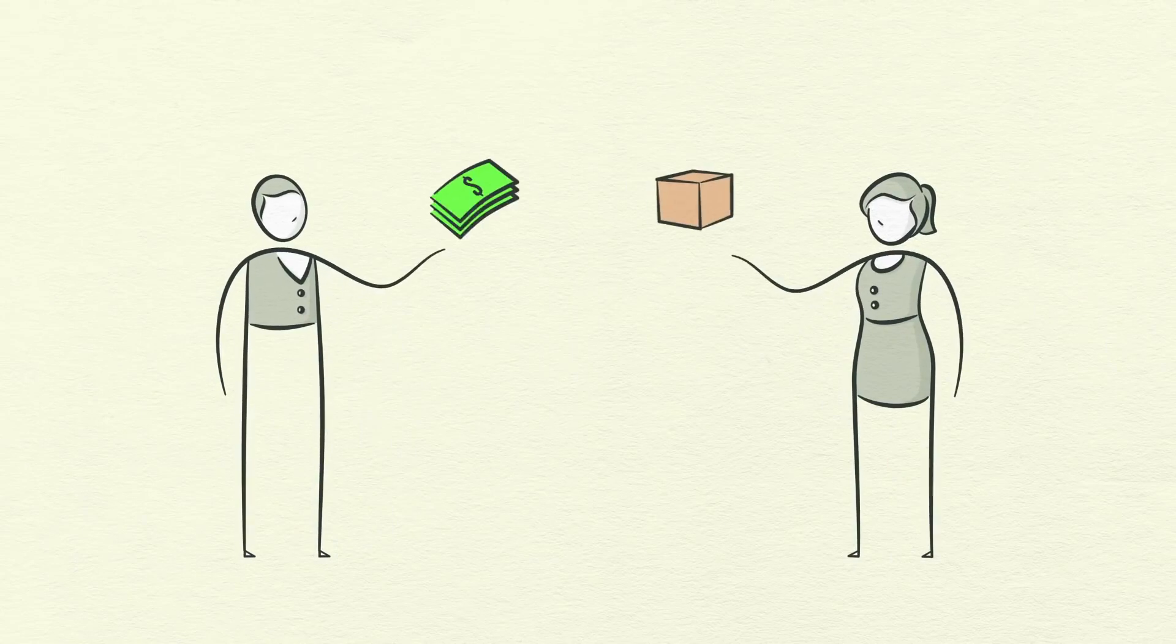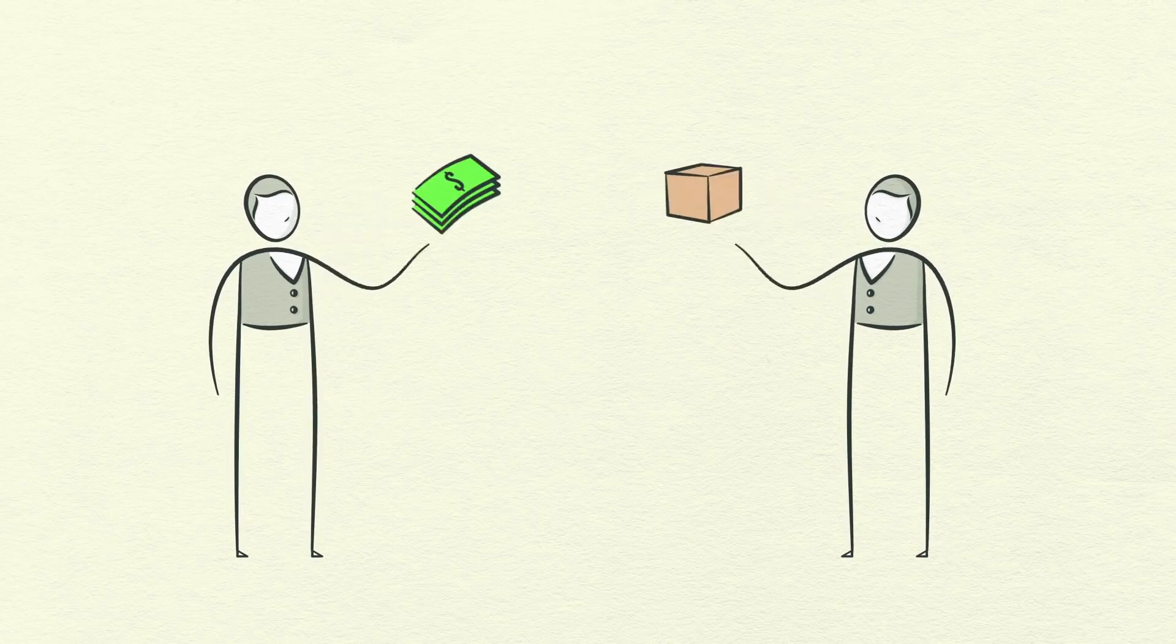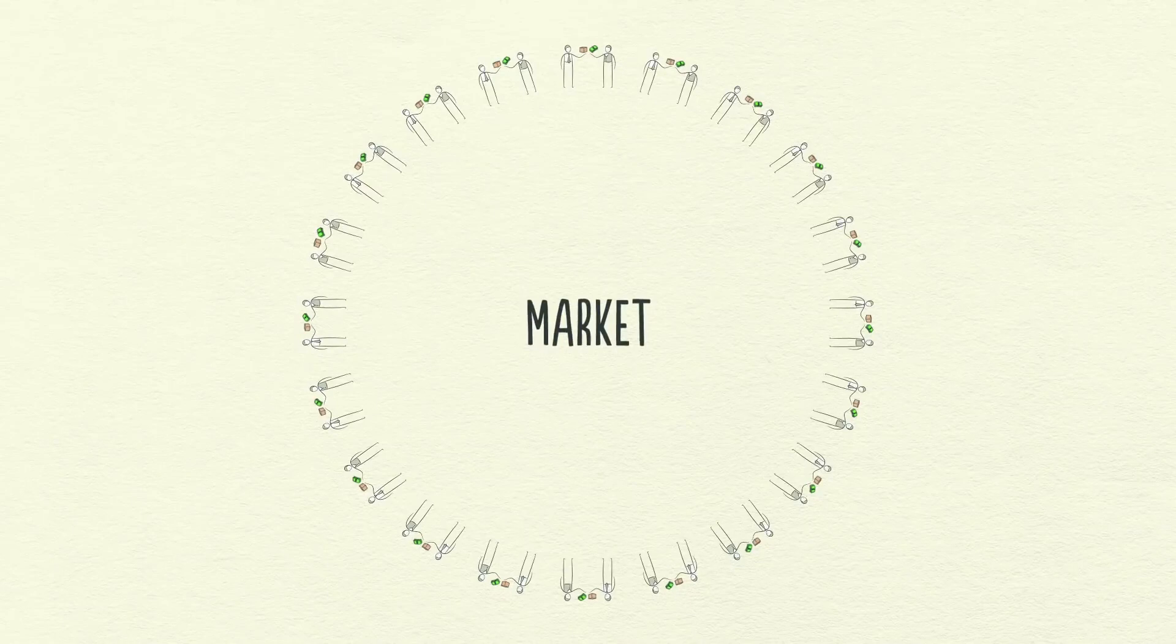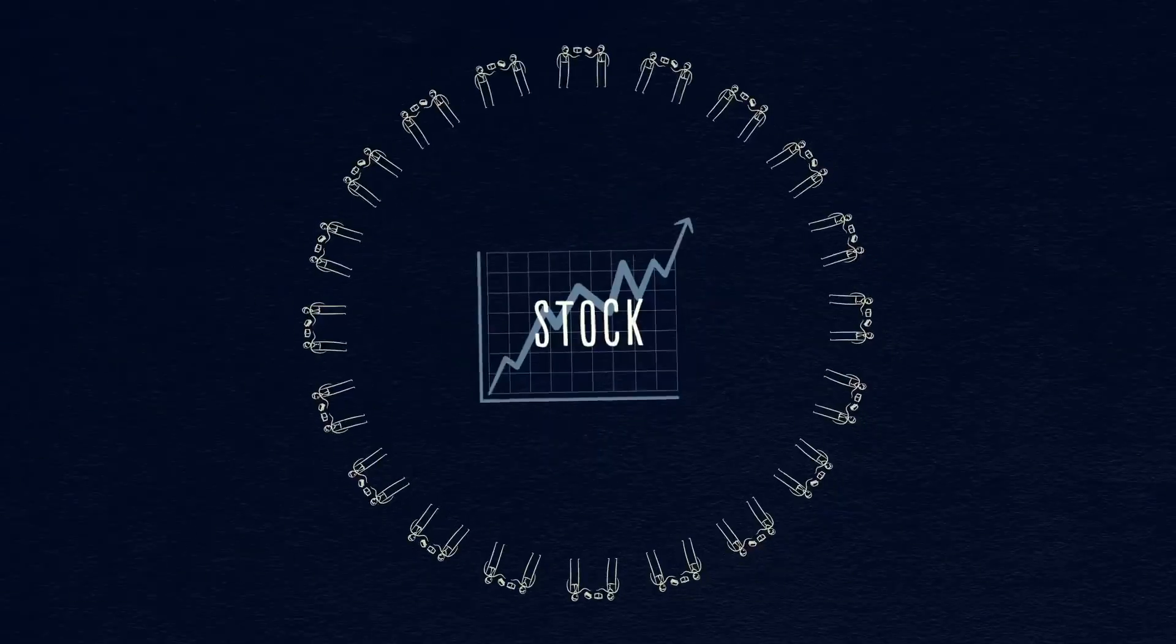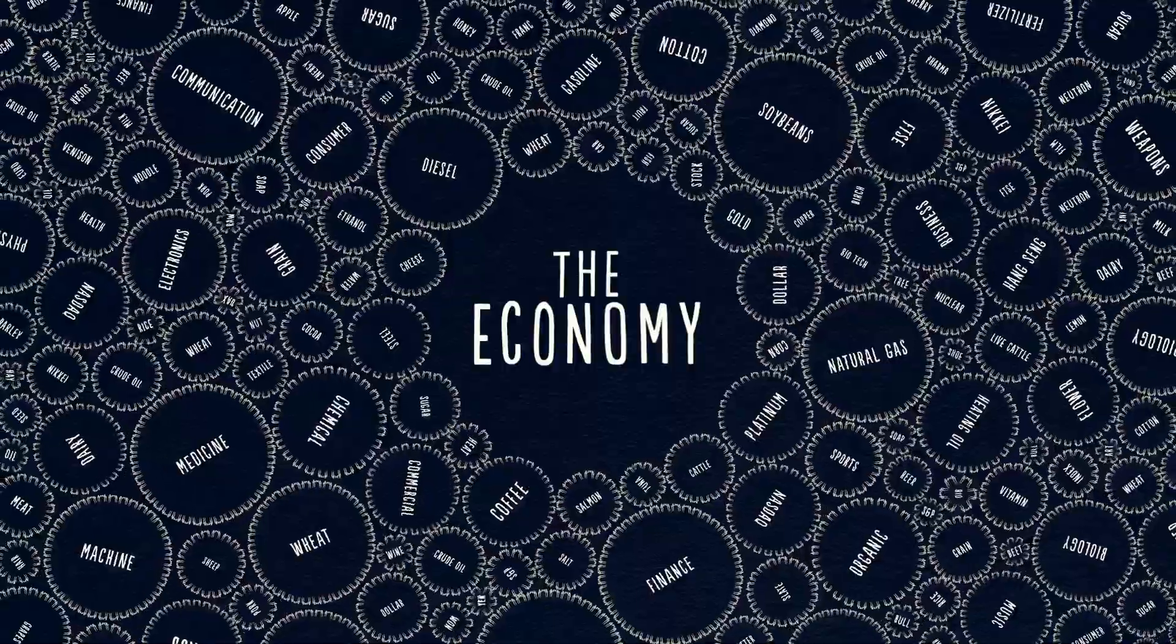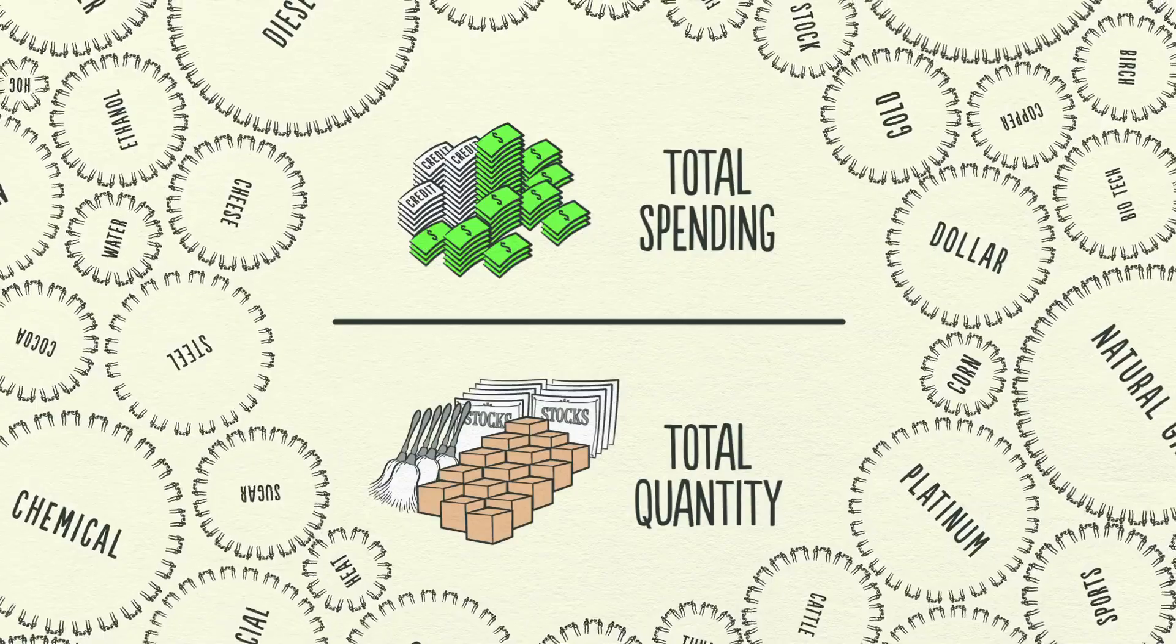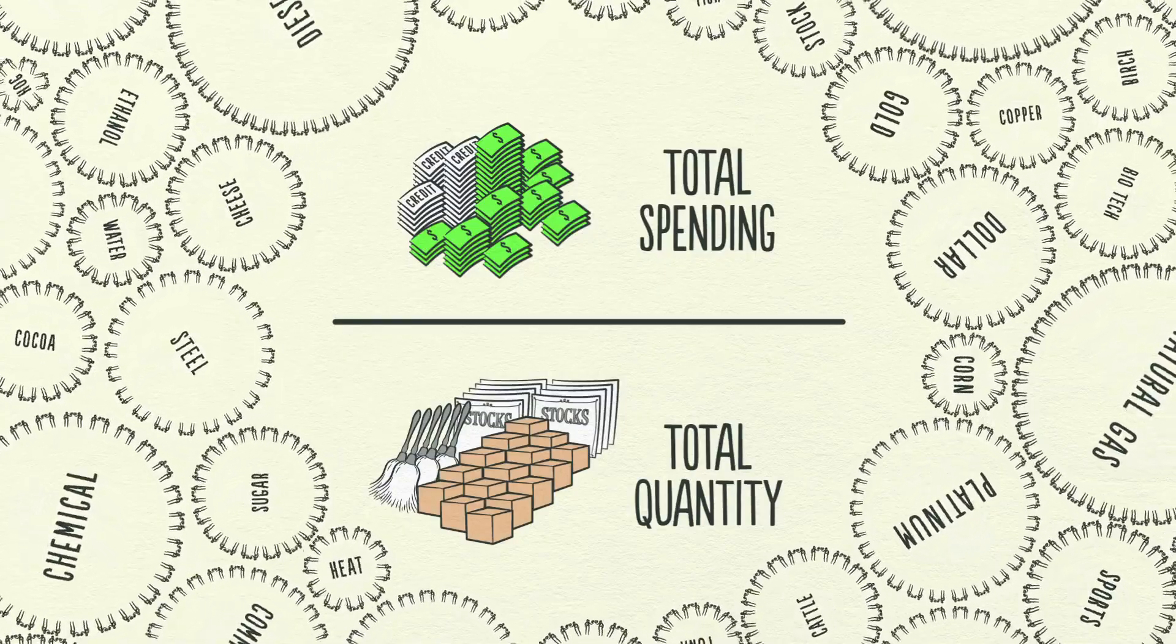All cycles and all forces in an economy are driven by transactions. So if we can understand transactions, we can understand the whole economy. A market consists of all the buyers and all the sellers making transactions for the same thing. For example, there is a wheat market, a car market, a stock market, and markets for millions of things. An economy consists of all of the transactions in all of its markets. It's just that simple.